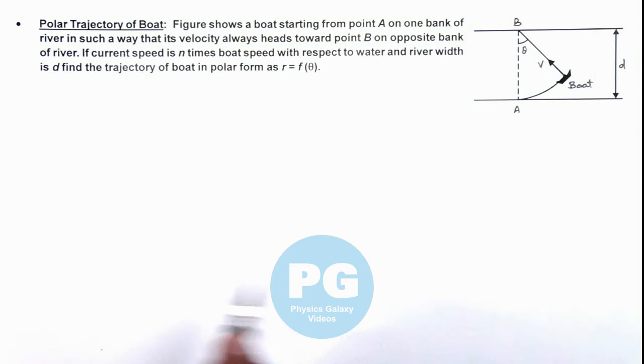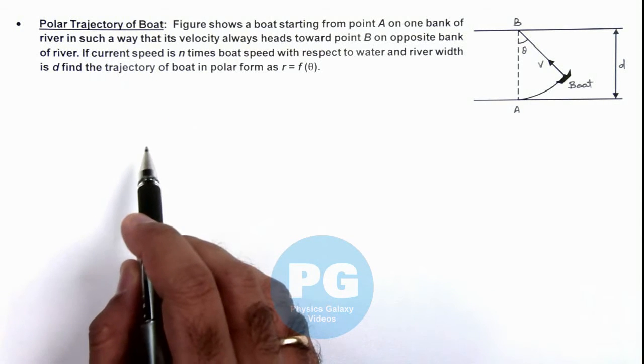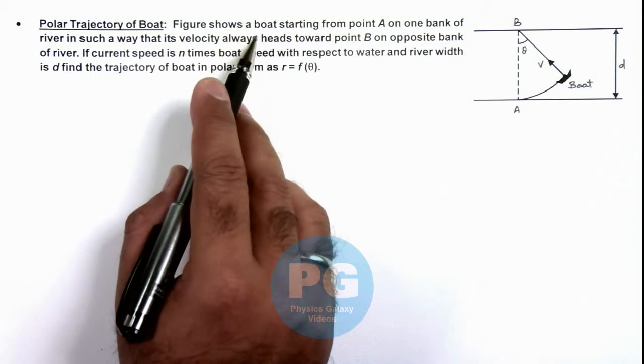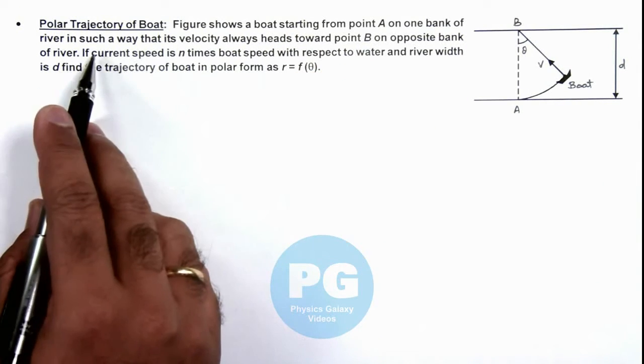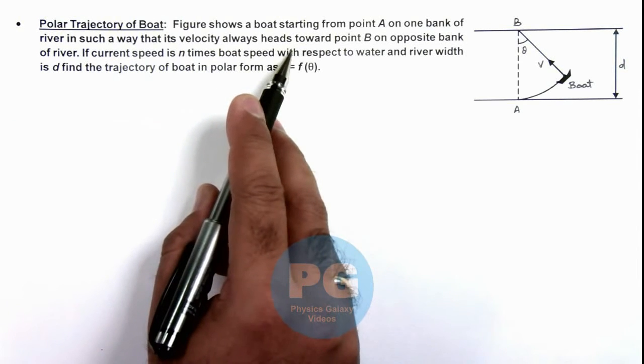In this illustration, we'll describe analyzing the polar trajectory of a boat. Here, the situation is saying that the figure shows a boat starting from point A on one bank of the river in such a way that its velocity always heads toward point B on the opposite bank of the river.